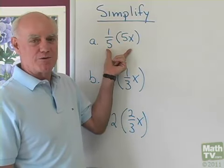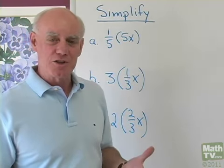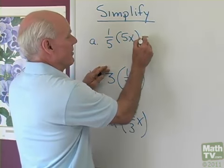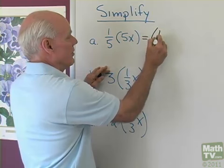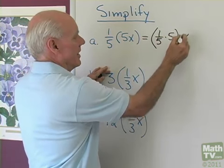So my first problem, I have 1/5 times 5x. Now you probably know that that's just going to come out to be 1x, but the associative property is the reason why it turns out that way. So my first step is to rearrange the grouping. So I have 1/5 times 5, then times x.